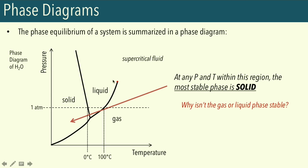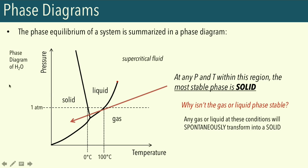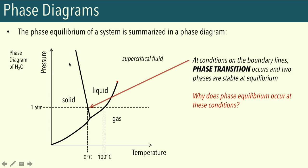You might wonder why the gas or liquid phase is not stable in the solid region. Any gas or liquid at those conditions will spontaneously transform itself into a solid. We'll use chemical potentials to evaluate which phase is most stable at which conditions. Looking at the boundaries, whenever we have a boundary we have a corresponding phase transition. At any point along the solid-liquid line, solid and liquid phases are both stable and in equilibrium — and we'll investigate why phase equilibrium occurs at these particular conditions using chemical potentials.